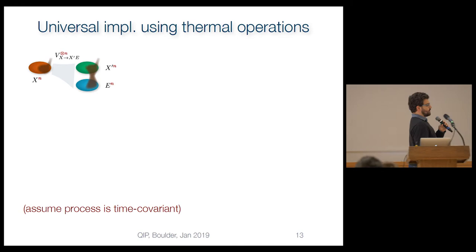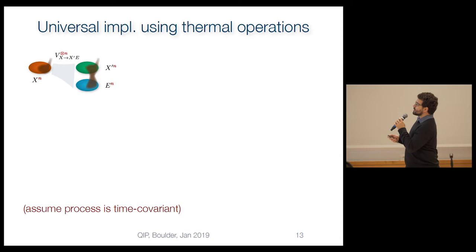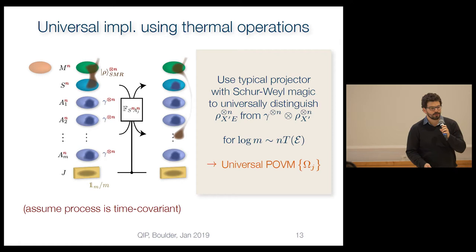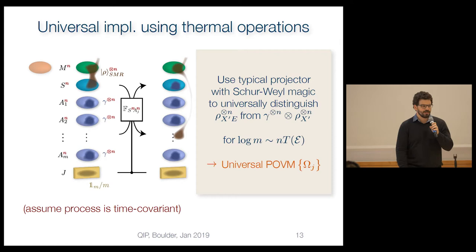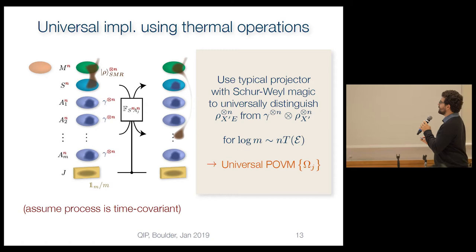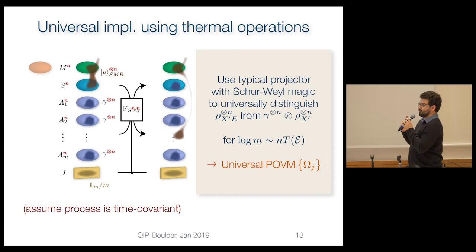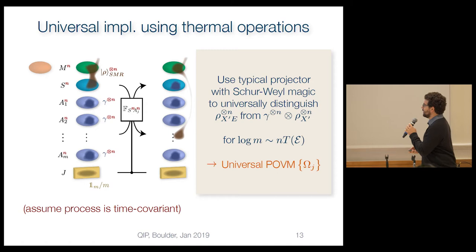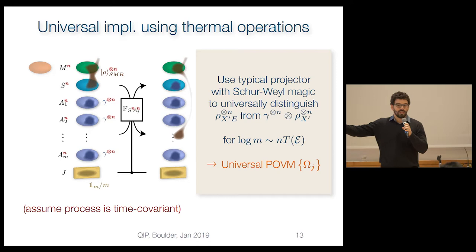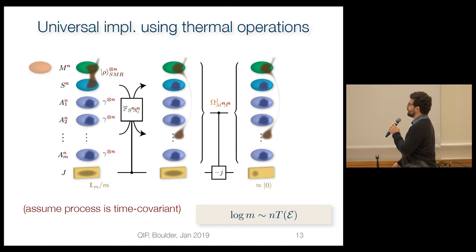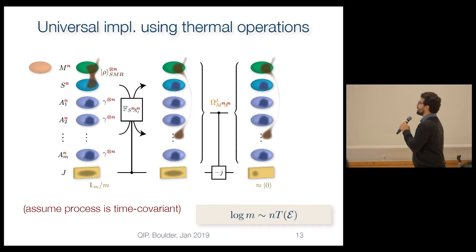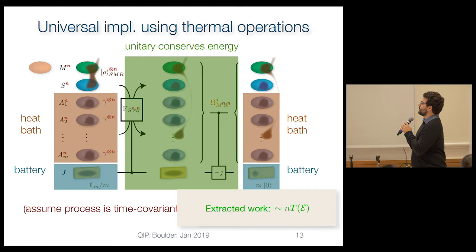For the universal construction of any process with thermal operations, we first apply the Stinespring dilation of the ideal process, then bring in ancillas and swap the system conditioned on whatever was in the environment. We then invoke Schur-Weyl duality to obtain an operator pi that successfully and universally distinguishes an IID bipartite state from gamma^(tensor n) tensor rho^(tensor n), and it turns out the relevant M — the register dimension — is exactly the thermodynamic capacity. We then conditionally reset the register, completing a thermal operation and extracting the thermodynamic capacity in terms of work.